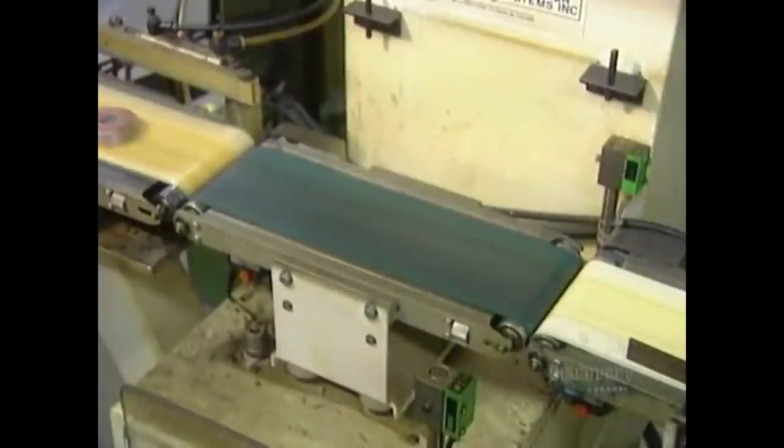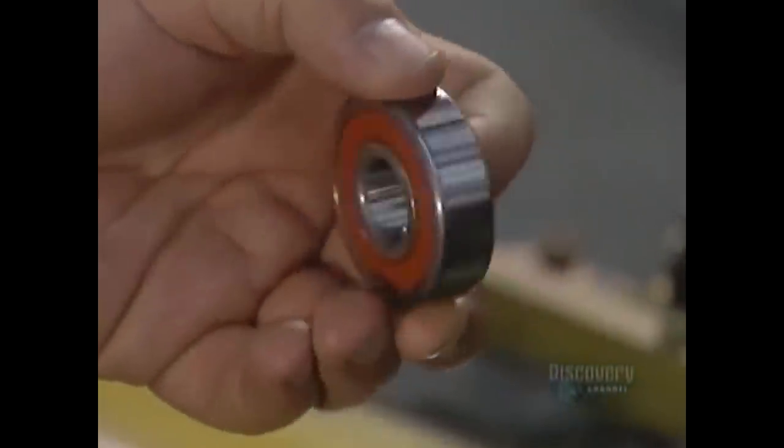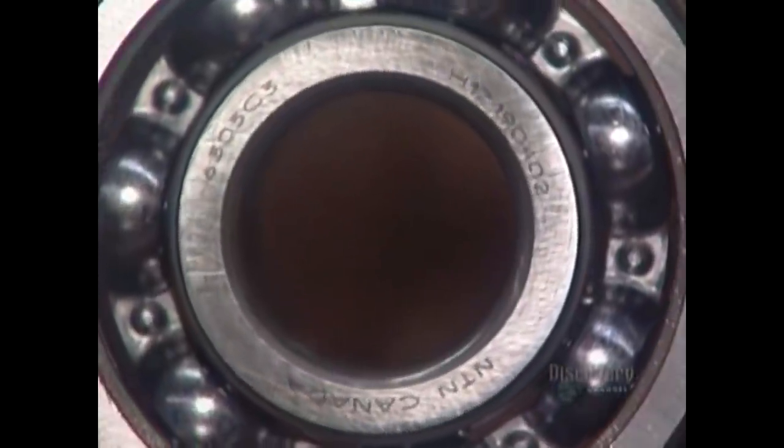A final quality control test. An automated scale tosses out any bum balls that aren't the required weight. The good ones move on to the laser, which marks them with information such as the part number and the trademark.